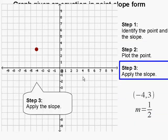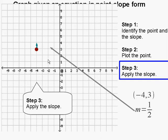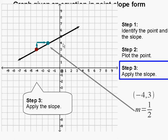Then step 3, we are going to apply the slope. The slope is 1/2 and that is rise over run, so rise is 1 and run is 2 — we go up 1 over 2 and create another point. Finally, once we apply the slope and have two points, we can create a line. That is the line for the point-slope equation given, and that completes our problem.